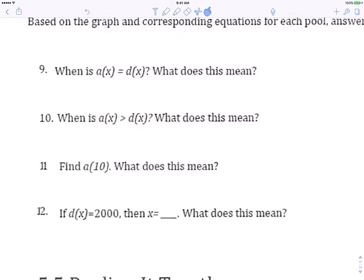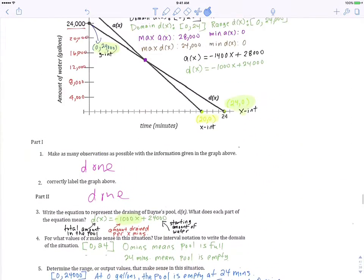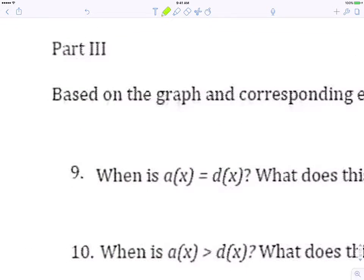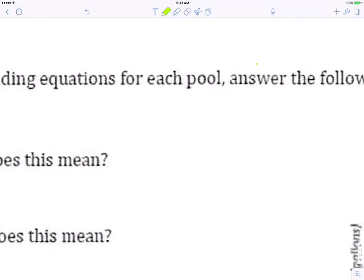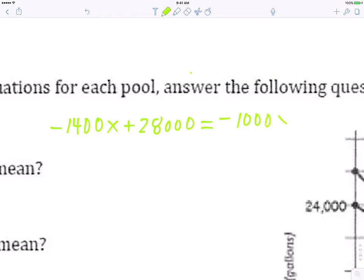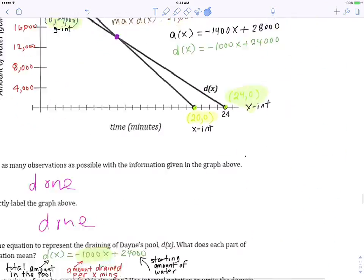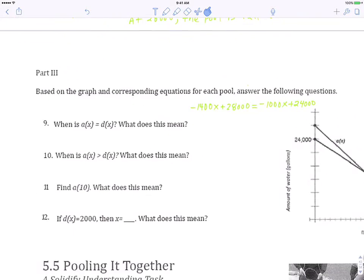So what does that mean? Well, let's look at the two equations. 1428, let's write that down. So here's what you have. A of X equals D of X would mean that negative 14X plus 28,000 equals negative 1,000X plus 24,000. Right?